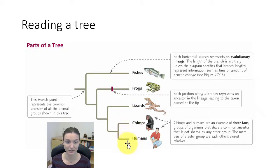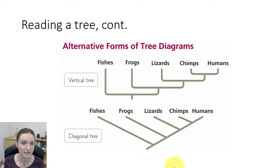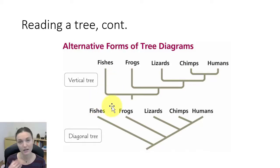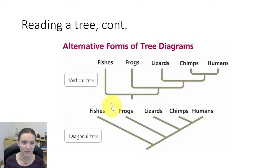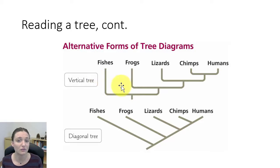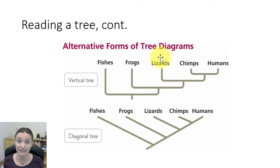One thing that's sometimes confusing is how trees are oriented. Sometimes trees are drawn left to right, sometimes vertically, sometimes diagonally — but they're all showing the same relationship, because it's all about the branching pattern. For example, in a vertical tree, we've taken the tree we were looking at and just shifted it 90 degrees. It's still showing the same relationship: chimps and humans are still sister taxa, and they share a common ancestor most recently with lizards.